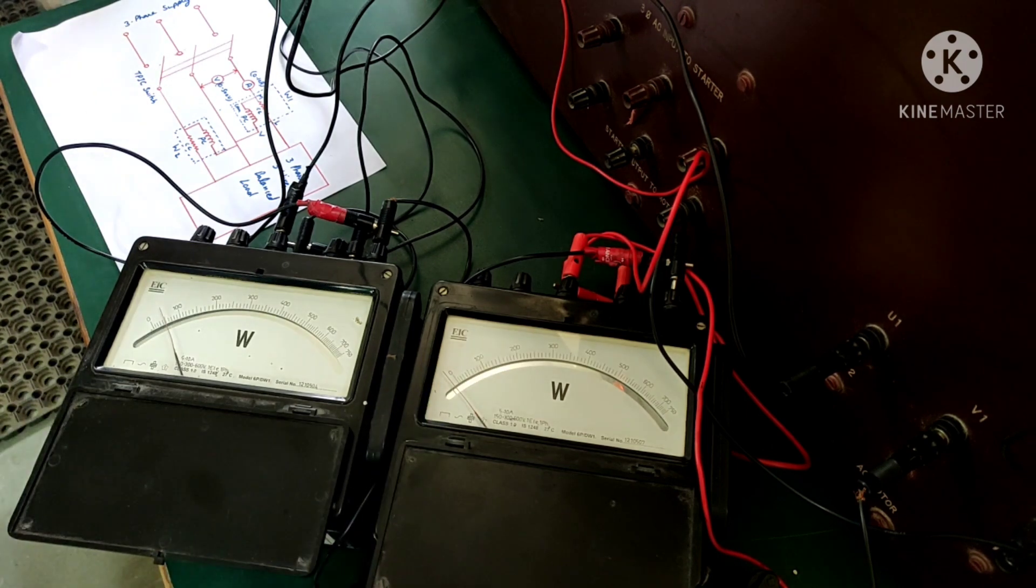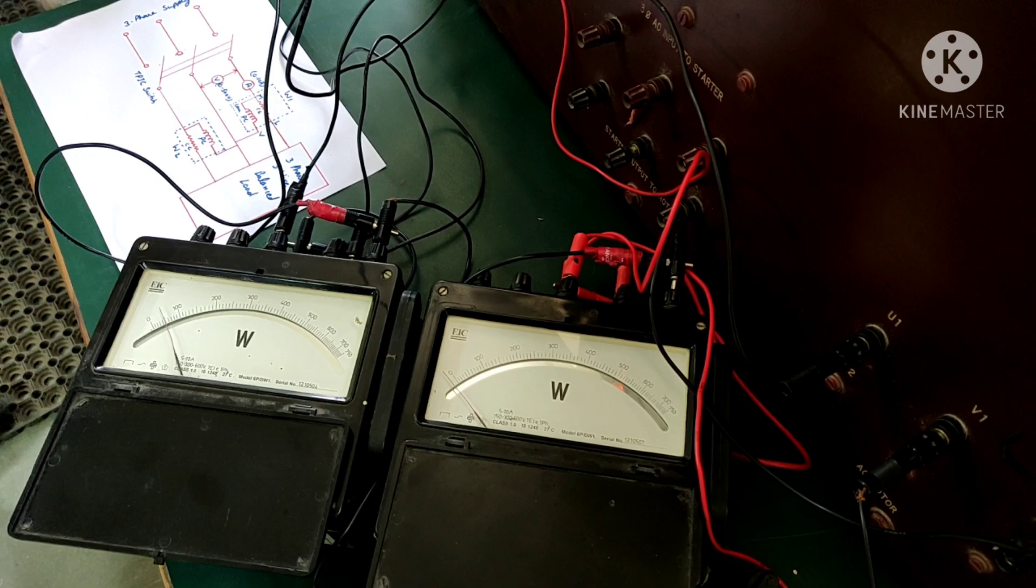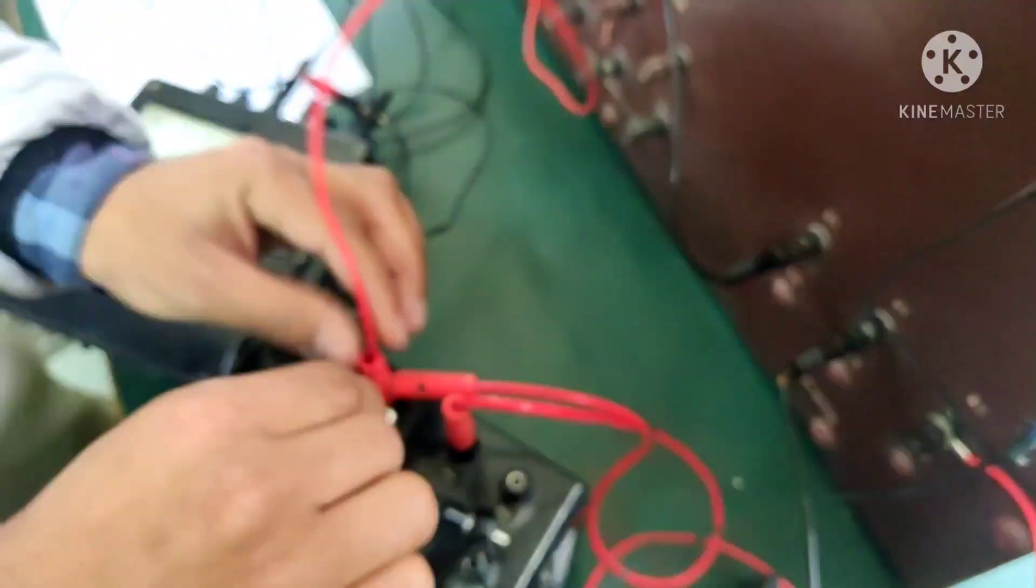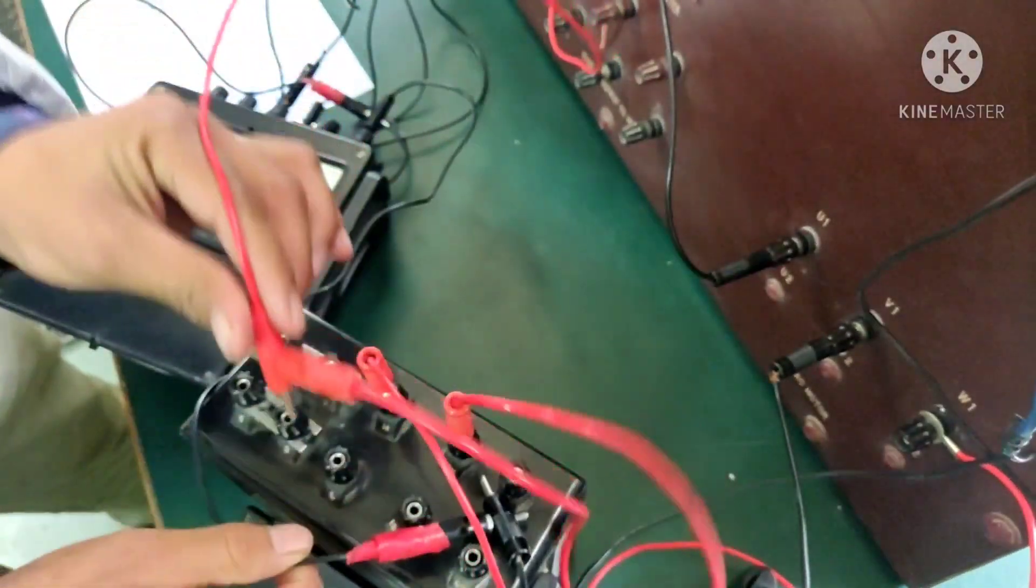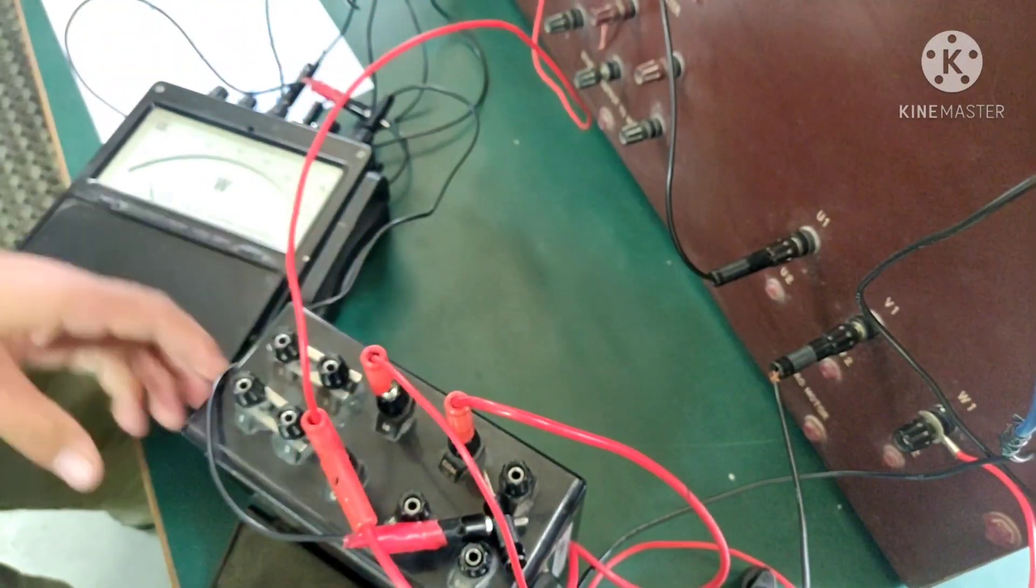So in that case what we need to do is we need to reverse its connection. We are reversing the connections of the current coil of wattmeter number two, and we will consider its reading as negative now.